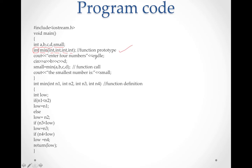Now, cout: enter four numbers — you enter a, b, c, d by yourself. Then to find out the smallest, the variable small is used. The mean function will be called here, passing values a, b, c, d. Such a statement where we use the function, pass values, and call it is known as a function call.